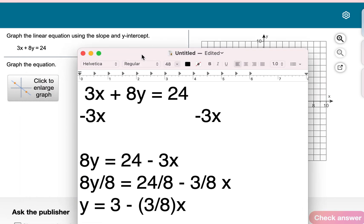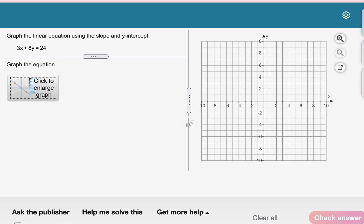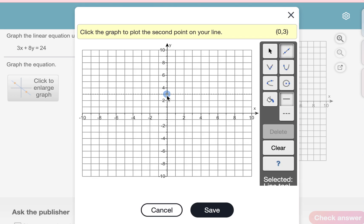So the y-intercept is always the number that's not attached to the x. So this number is not attached to the x. So we're going to click on the 3. That's our first dot.